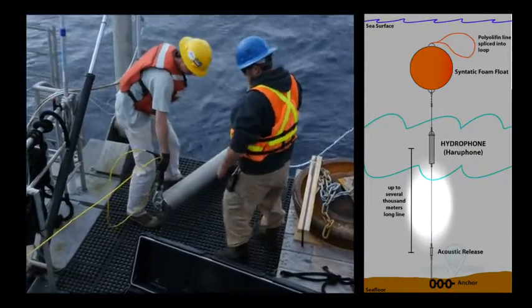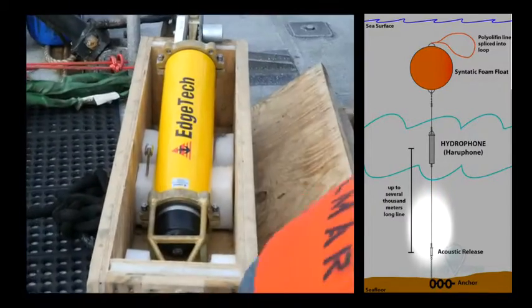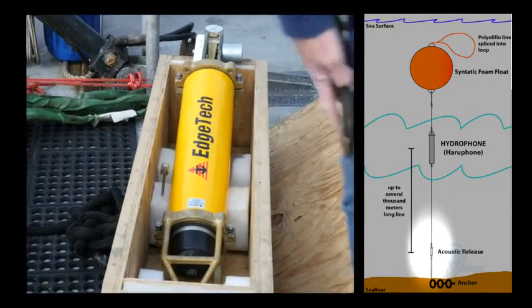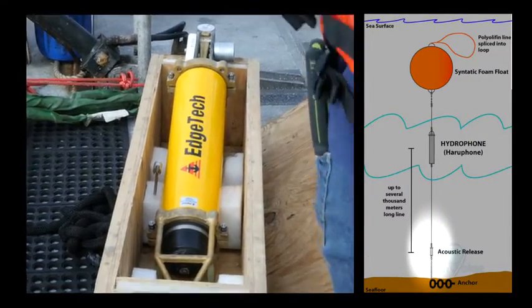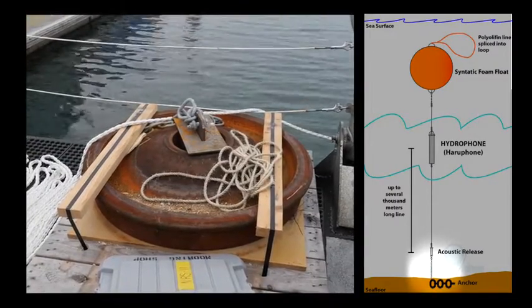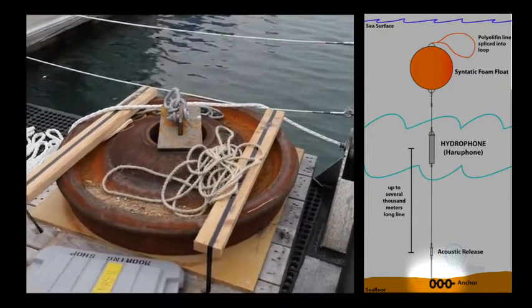Then there's some more line. Down near the bottom of the mooring there is an acoustic release. And then some other line and chain, and below that is an anchor, a very heavy anchor that weighs it to the bottom.